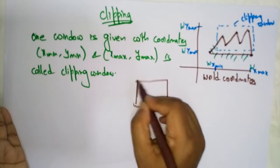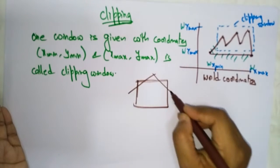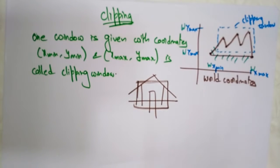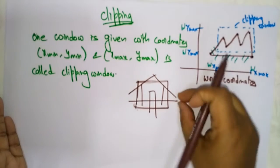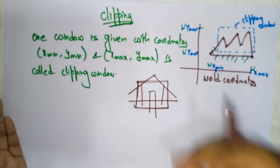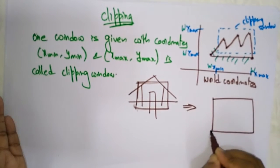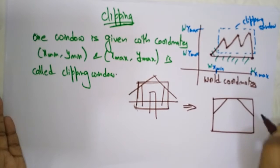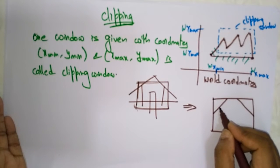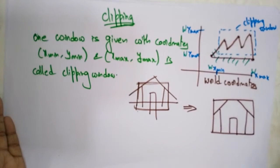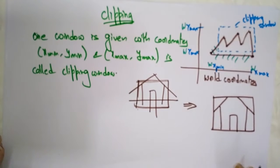Suppose you take this as a clipping window and the picture is like this. If you want to make this picture more perfectly, you have to clip the parts. This is the clipping window, so the parts that are outside — the lines and points that are present outside the window — have to be clipped. You take only the parts that are inside the window and remove those that are outside. Clipping means removing the extra parts that are present outside the window.